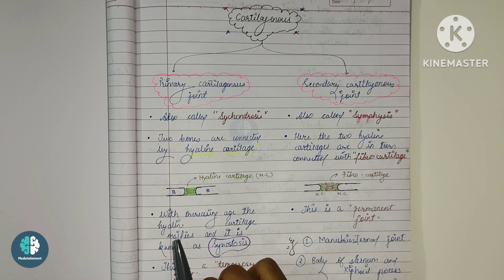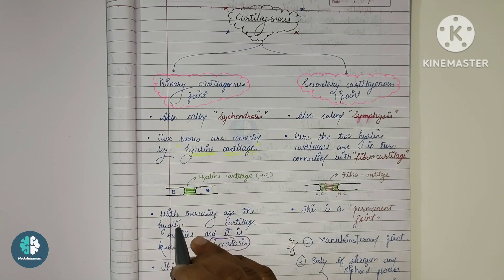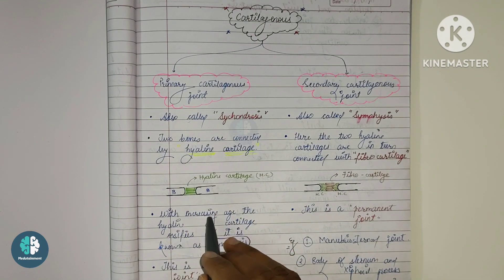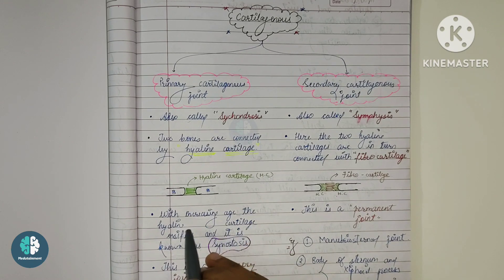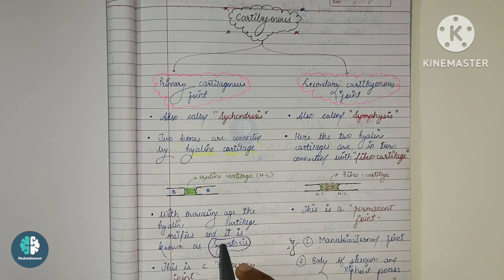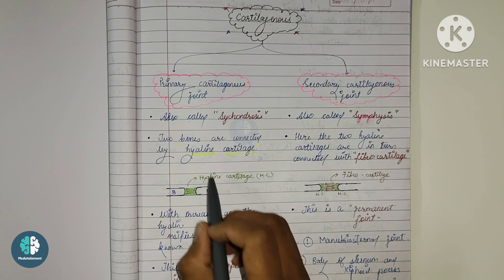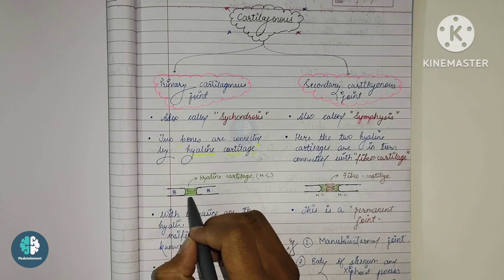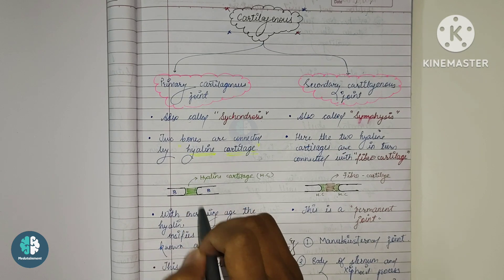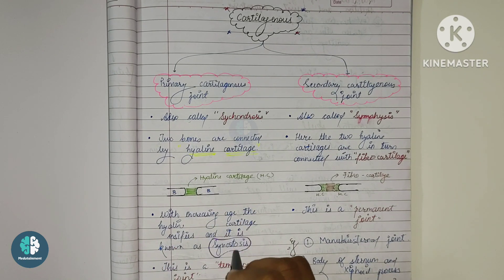With increasing age, the hyaline cartilage ossifies and this is known as synostosis. The word 'osteo' refers to bone, so we can say that with increasing age, the hyaline cartilage can ossify and lead to synostosis.